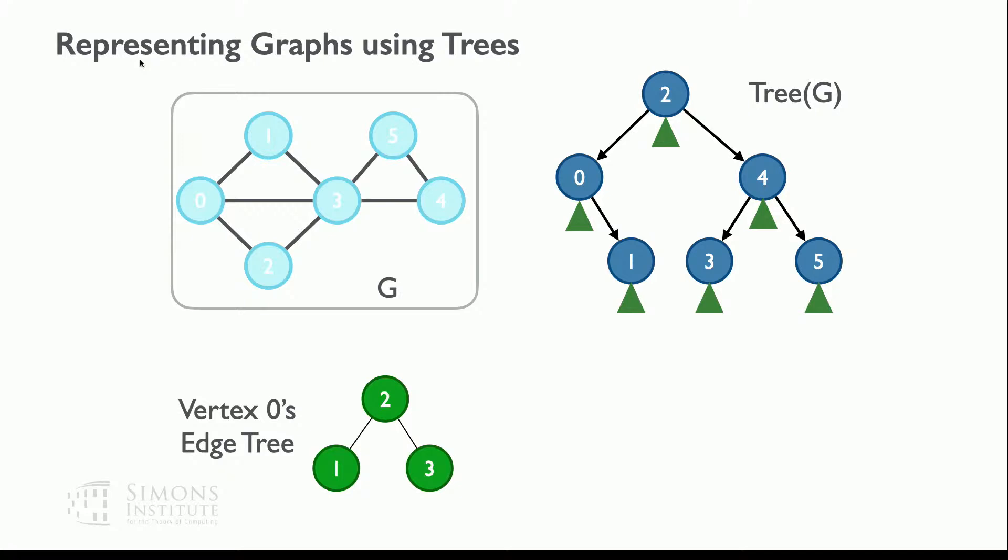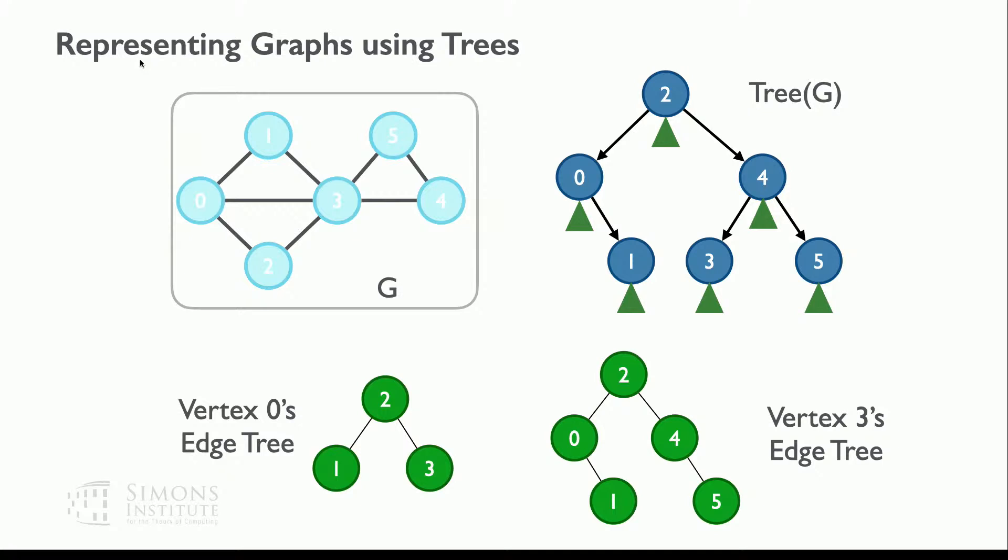We represent a graph using a nested tree of trees. There's a tree of vertices stored with blue nodes, and each vertex has associated with it an edge tree storing all edges incident to that vertex. So vertex 0's edge tree — it's incident on 1, 2, and 3 — will have 1, 2, and 3 in its edge tree. This faithfully and losslessly stores our graph. Using the PAM library, you can get batch insertion algorithms with work O(k log(n/k + 1)) and polylogarithmic depth.